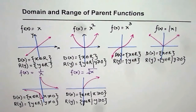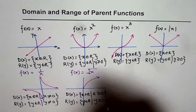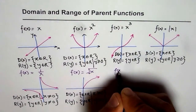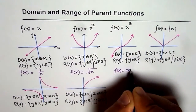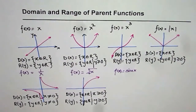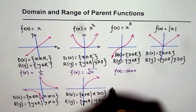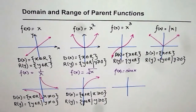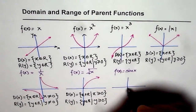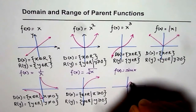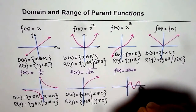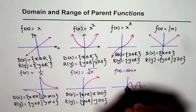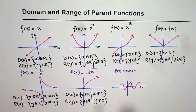Now let's take an example of a trigonometric function: f of x equals to sin x. Cosine x is like sin x shifted by 90 degrees, so we will consider sin x as our parent function, but it also represents cosine x. The graph is a wave that continues on both sides.